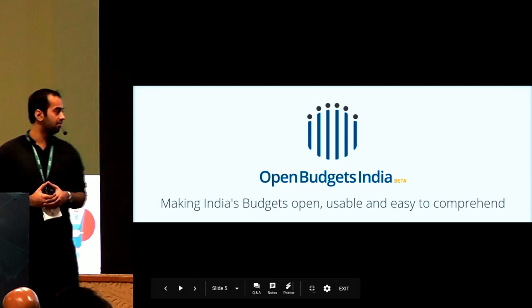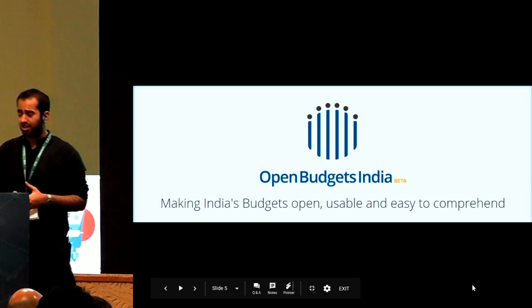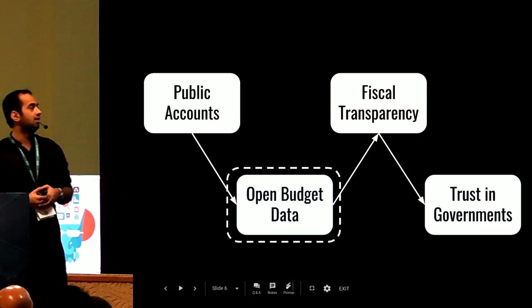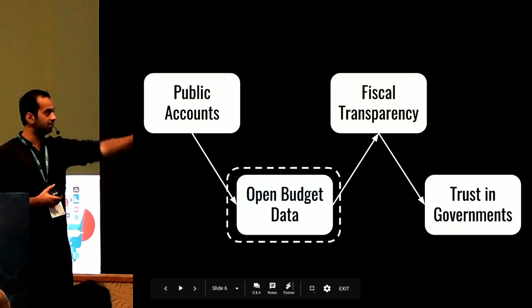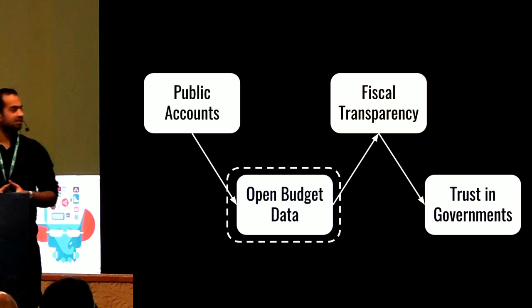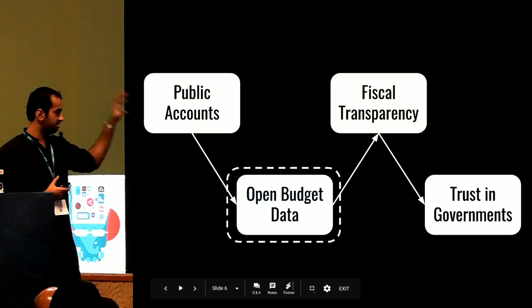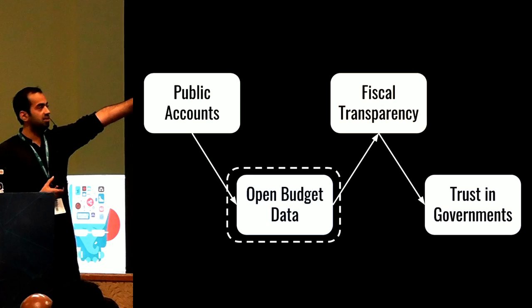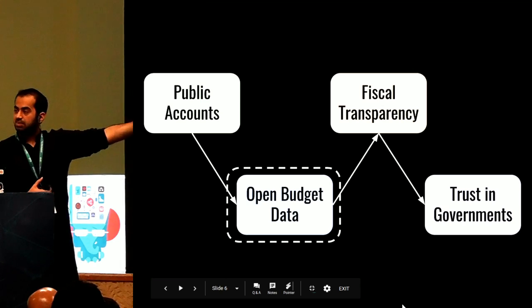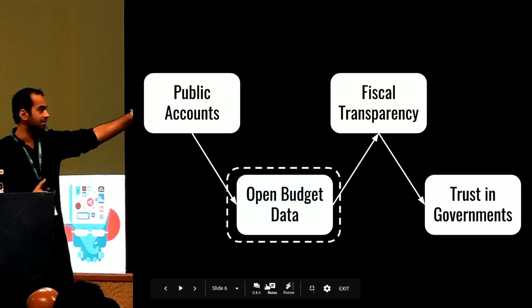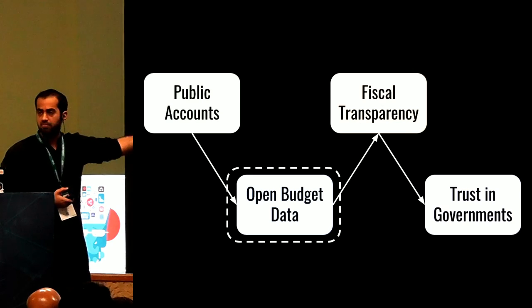That's where OpenBudget India comes in. We are a platform to make India's budgets open, usable, and easy to comprehend. It's a community-driven initiative focused on open budget data. From public accounts to trust in government, this is a cycle followed across various geographies. Public accounts show detailed information about how the government is spending. If they publish budget data in an open format, you can enable fiscal transparency, see where priorities have been, what tenders have been invested, and where money has gone across departments and ministries — eventually leading to trust in government.